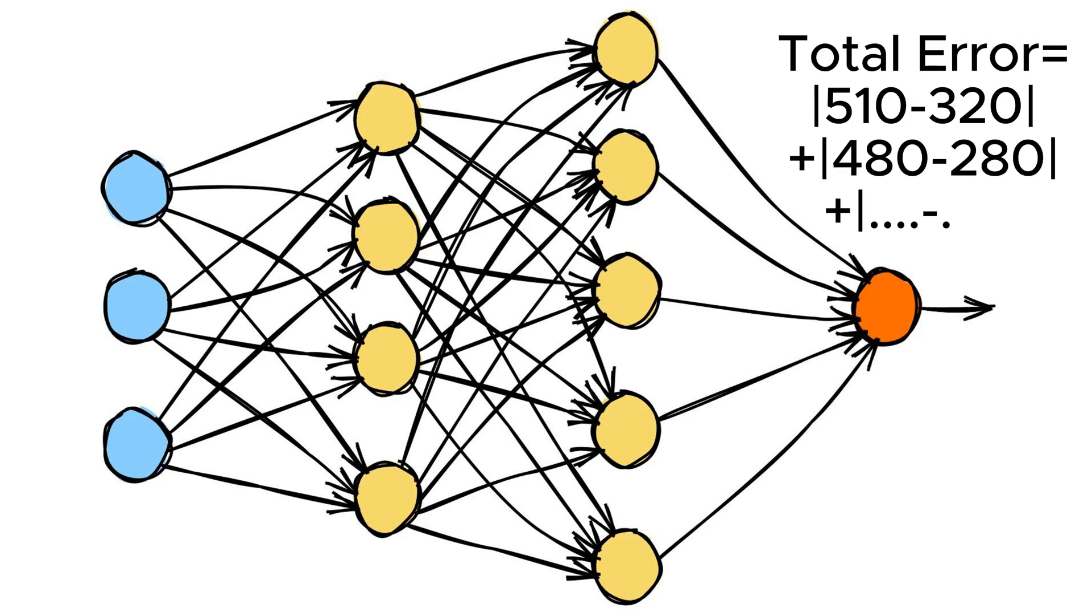Since there is an error, we need to adjust the weights. This adjustment process is carried out through a method known as backpropagation.